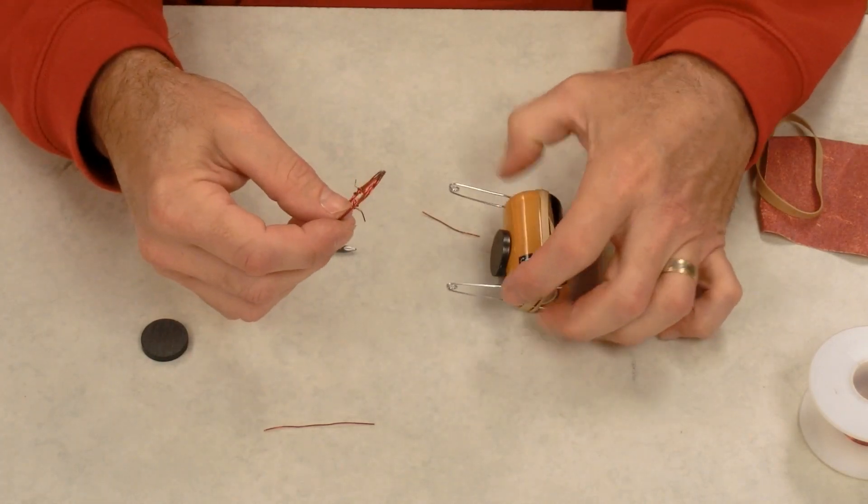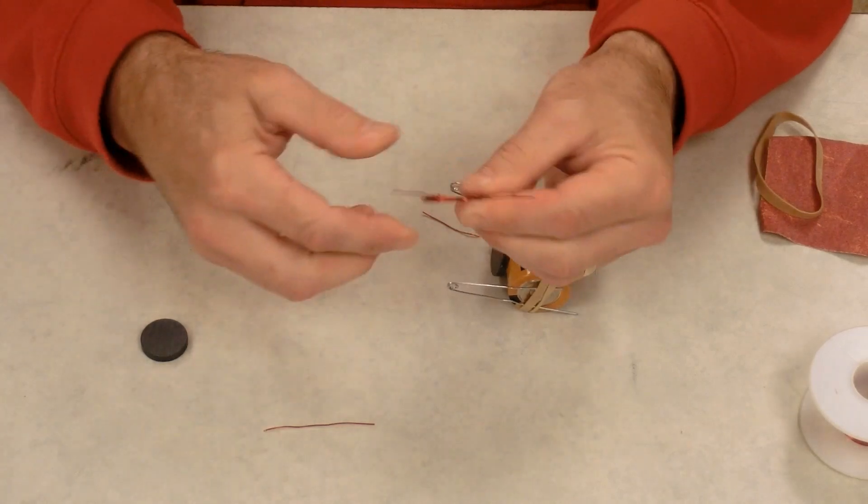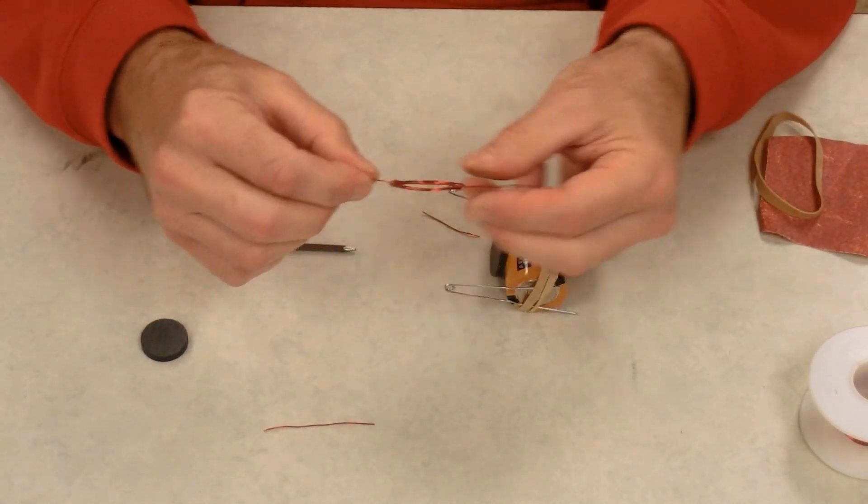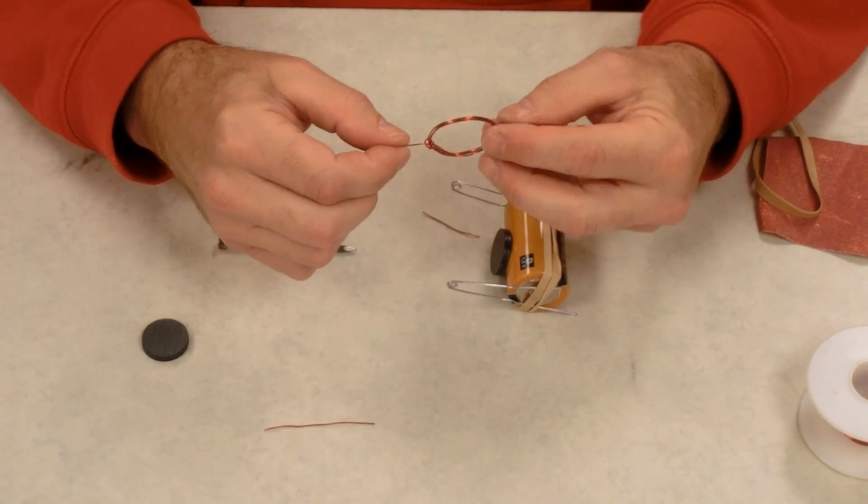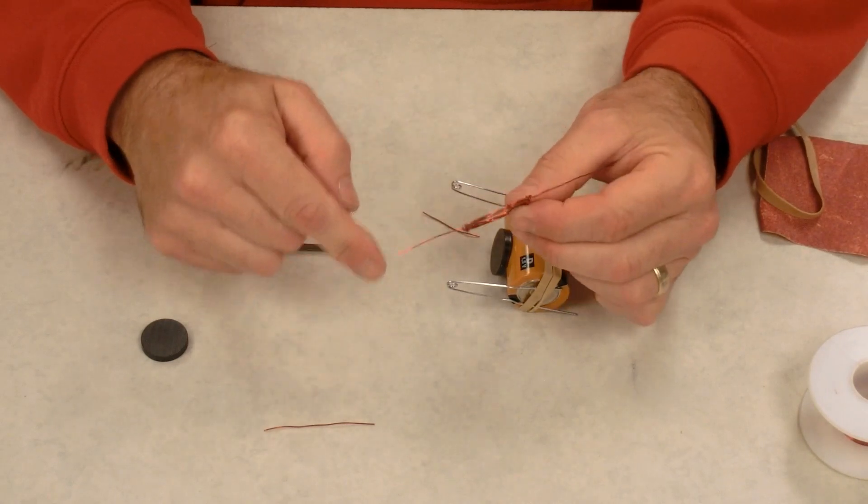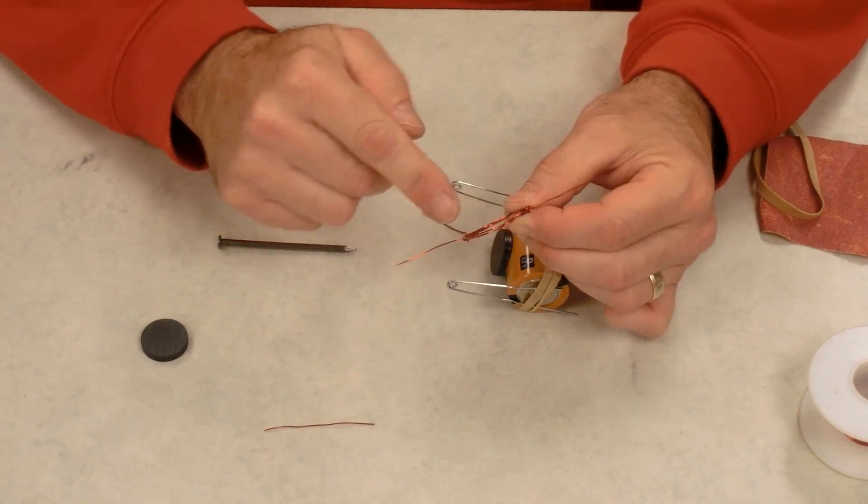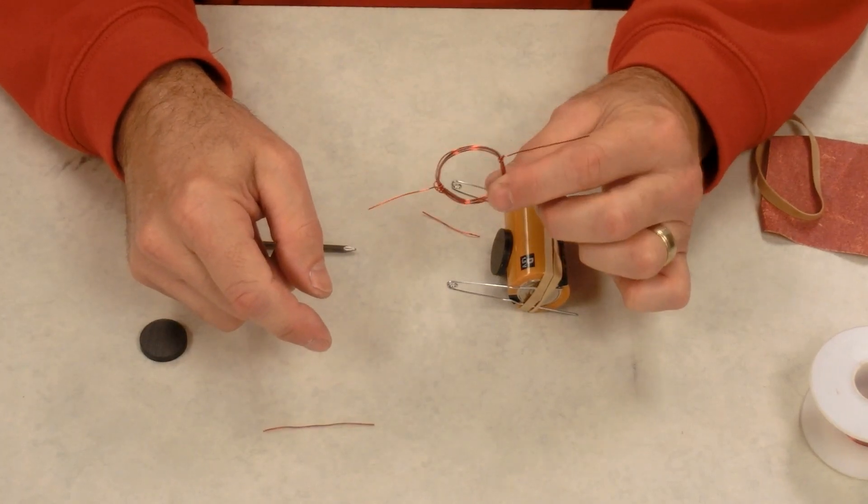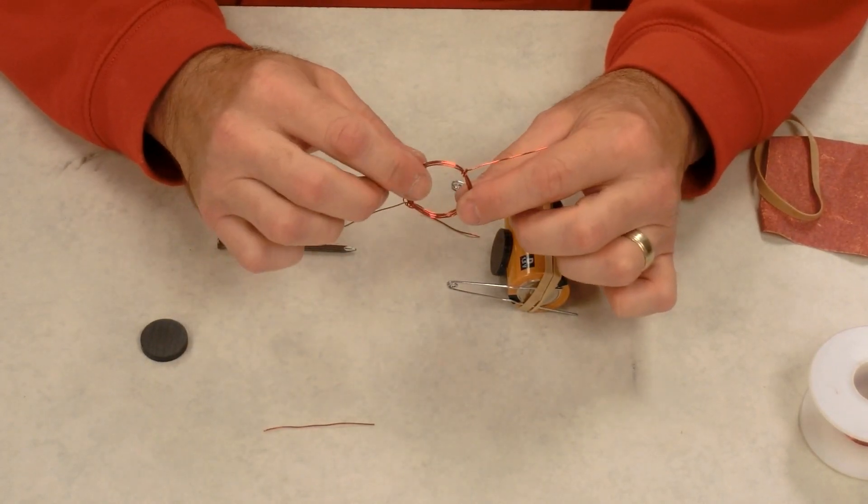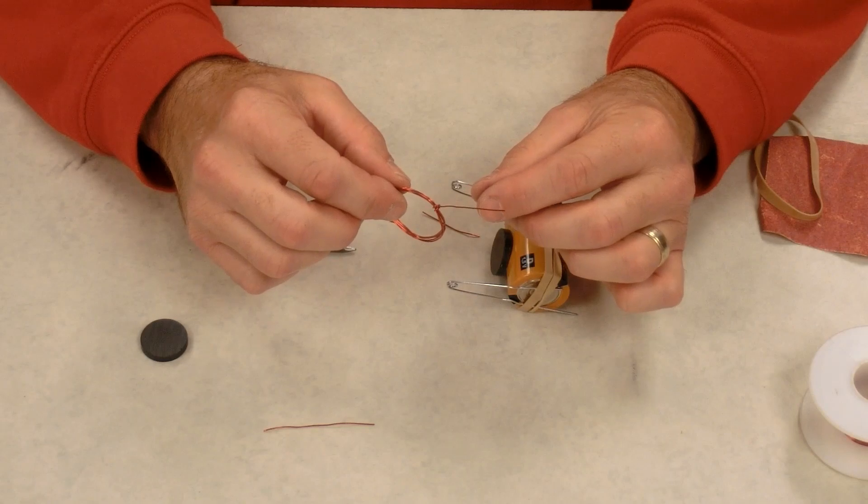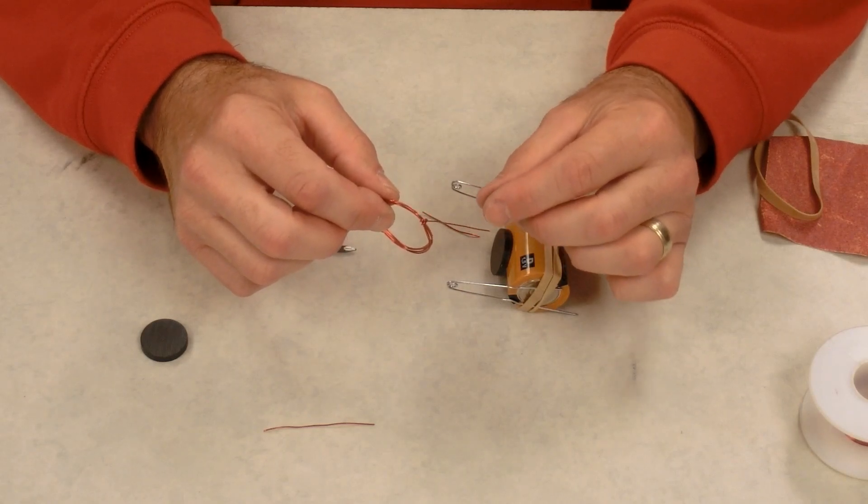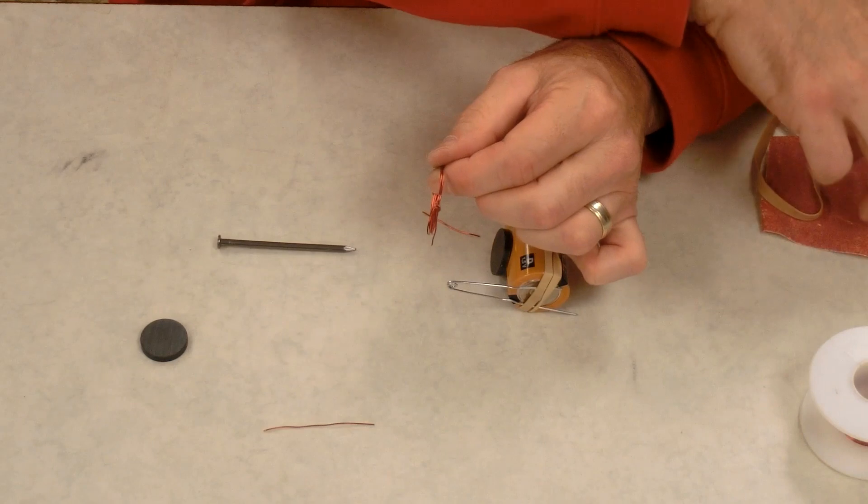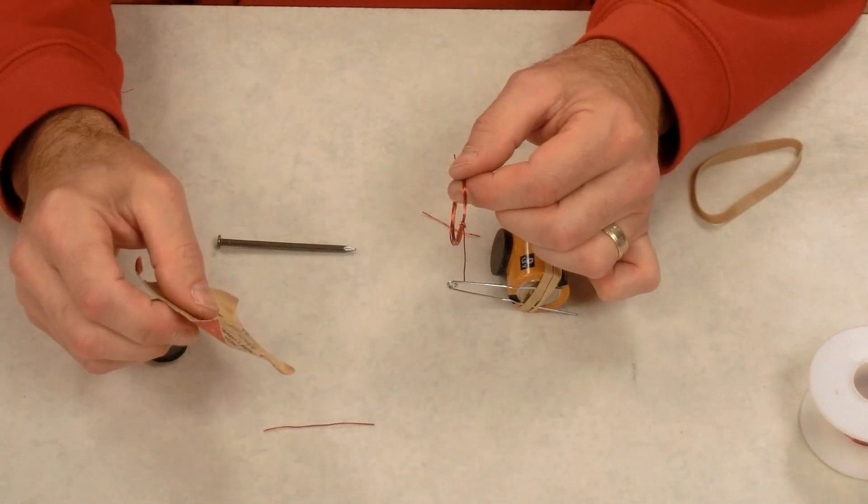Well, nothing's happening because there's no current flowing through the loop. This is not red wire. This is copper wire that has red paint on it for insulation. So we're not going to get any motion until we have current going through this wire to produce the magnetic field around the wire. So we have to scrape off insulation. This part is very, very important. If you don't scrape it correctly, your motor will not work.